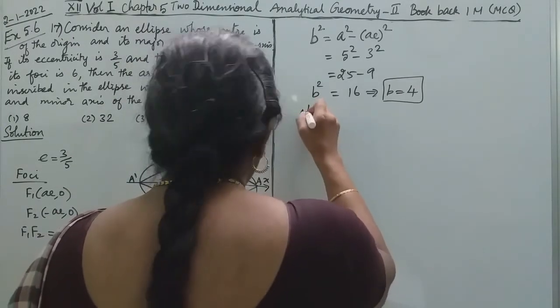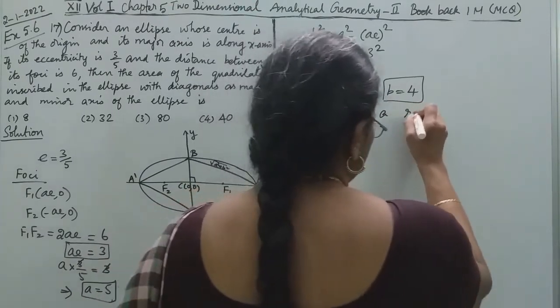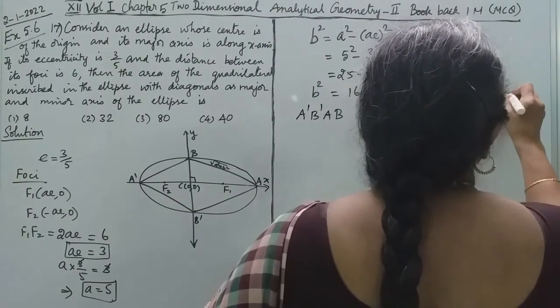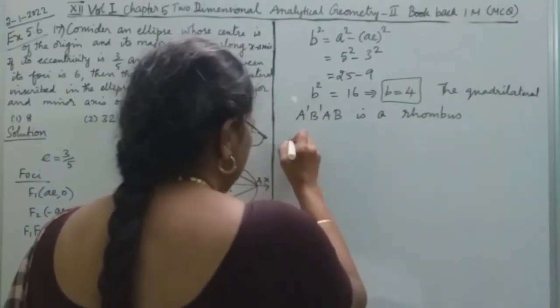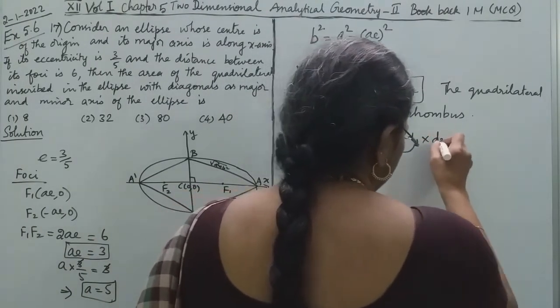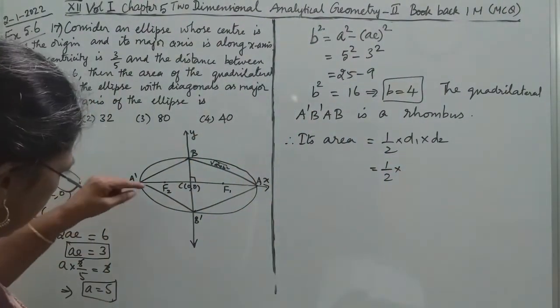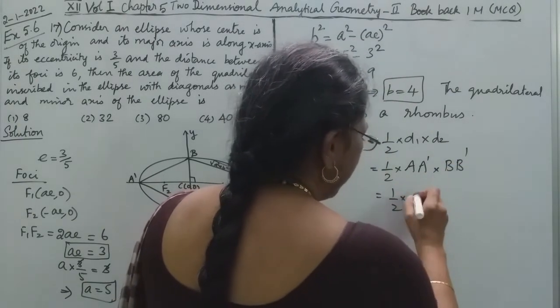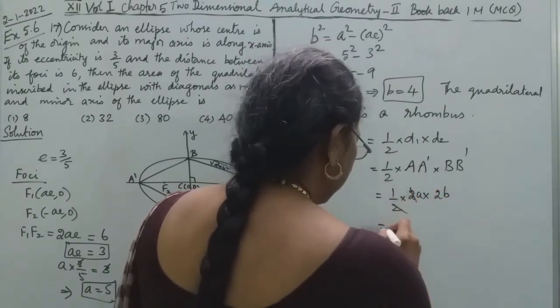Now AA'BB' is a rhombus, and the quadrilateral AA'BB' is a rhombus. Therefore, its area is half × D1 × D2. D1 and D2 are the lengths of the diagonals. That is half × D1, where D1 is AA' × BB'. This major axis is 2A, and the minor axis is 2B. The answer is 2AB.